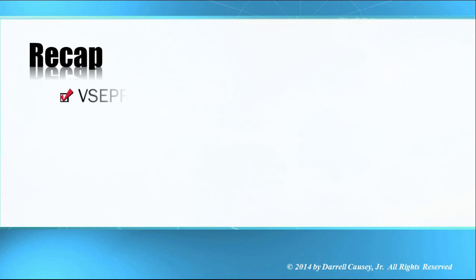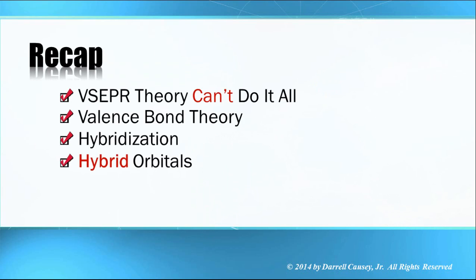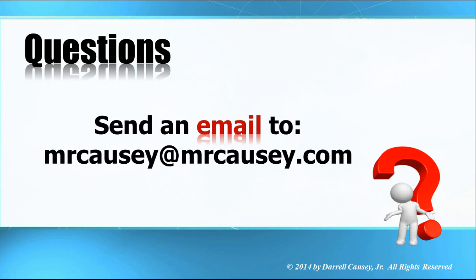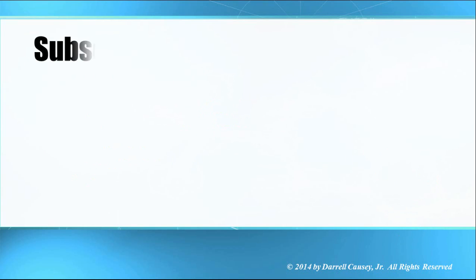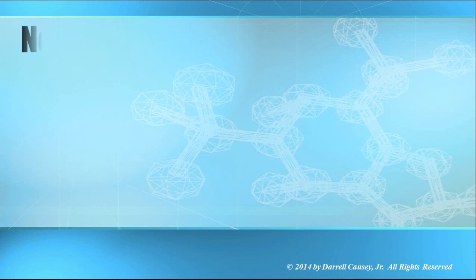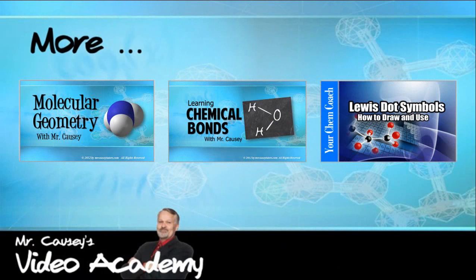Let's recap. The VSEPR theory can't do it all, so we came up with the valence bond theory, which introduced the idea of hybridization and hybrid orbitals, giving us our molecular shapes. If you have any questions, send an email to mrkazee at mrkazee.com. Be sure to subscribe to my YouTube channel, and for more information visit www.mrkazee.com. See you next time.